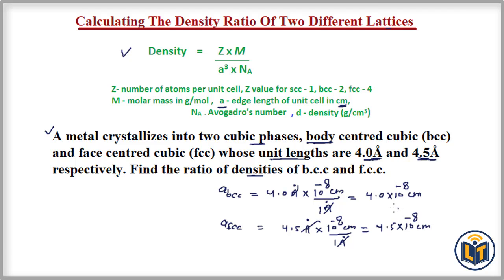Since one lattice is BCC, the Z value (number of atoms per unit cell) is 2. The other lattice is FCC (face-centered cubic), so the number of atoms per unit cell is Z equals 4. Now we can apply the density formula for both lattices.